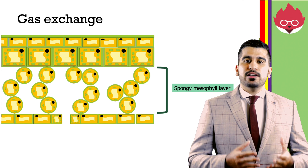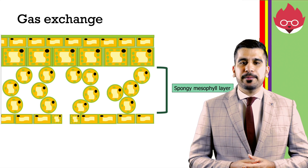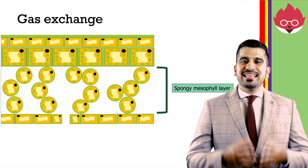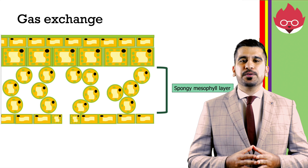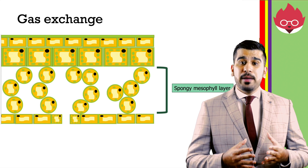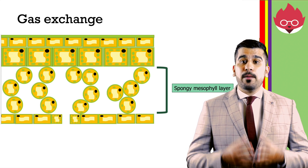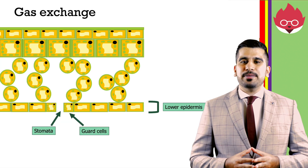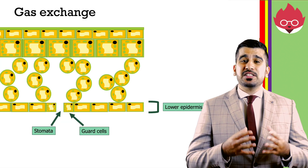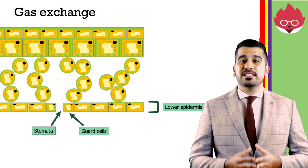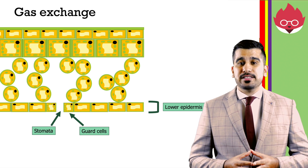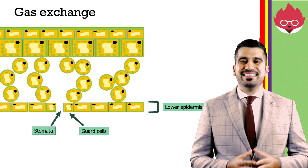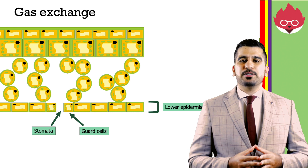Plant leaves are adapted to allow for gas exchange to occur. The spongy mesophyll layer has a very large surface area and contains air spaces for carbon dioxide and oxygen to move through. The spongy mesophyll cell membranes are also thin, moist, and permeable, aiding in gas exchange. The lower epidermis contains the stomata — pores found on the underside of the leaf, though they can also be found on the upper epidermis. They allow gases such as oxygen and carbon dioxide to leave and enter the cell, and also allow water vapor to escape.